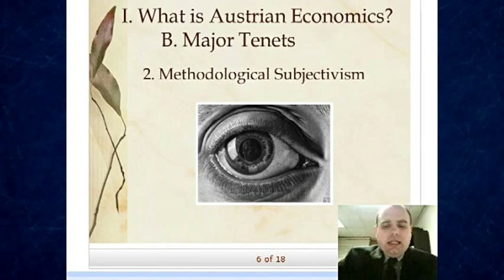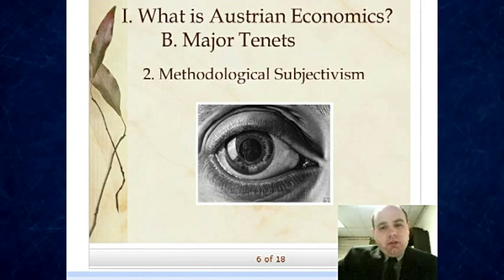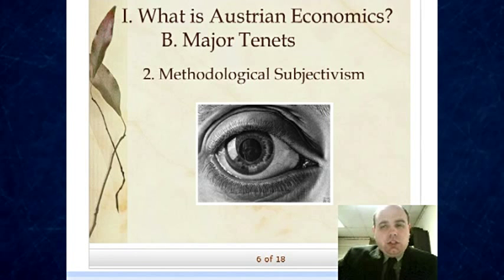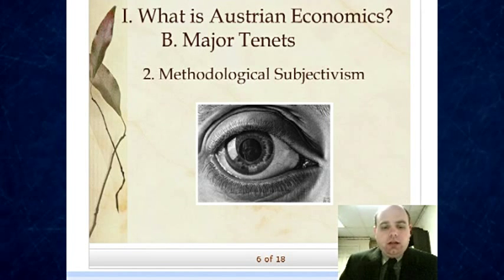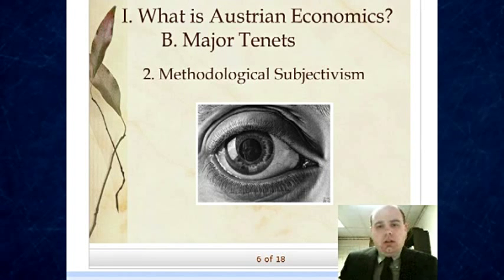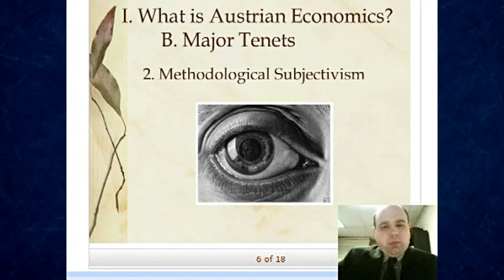The next tenet is methodological subjectivism. There's a sense in which just about everybody in modern economics is a subjectivist, and a sense in which the Austrians can still rightfully claim this is something special to their school. There has been a recent discussion on the blog Think Markets, run by Mario Rizzo and the NYU colloquium, where Gene Callahan - author of one of the introductory textbooks - challenged the idea of methodological individualism and implicitly subjectivism. That discussion is hyperlinked in the lecture notes.